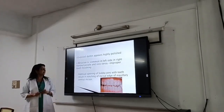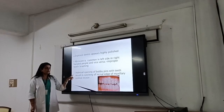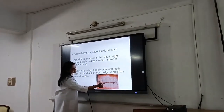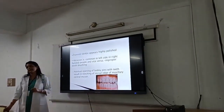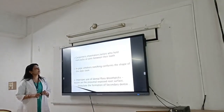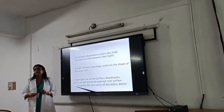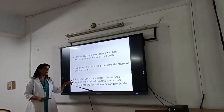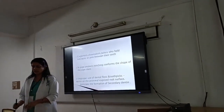Another type of abrasion includes abrasion occurring on the incisal edges. Comparing the degree of wear on teeth starting with the incisors is relevant. In pipe smokers, abrasion occurs where the pipe rests against the teeth, creating a notch on the incisal or occlusal surface. Also, improper use of dental floss or toothpicks can result in proximal abrasion.